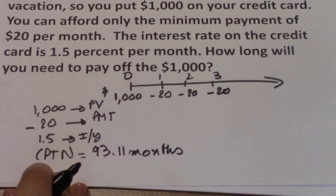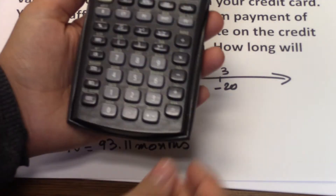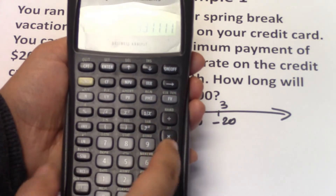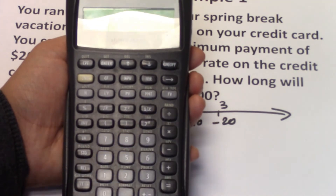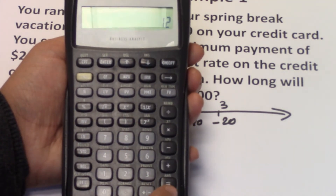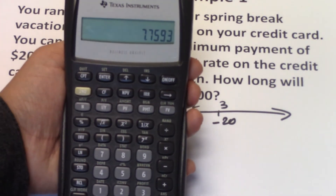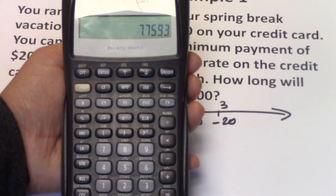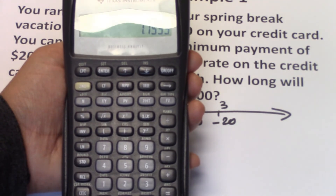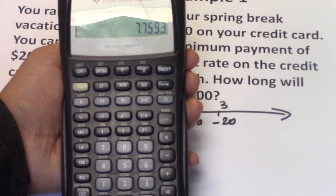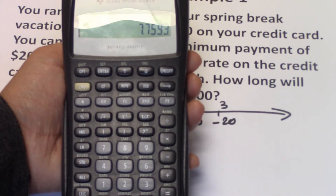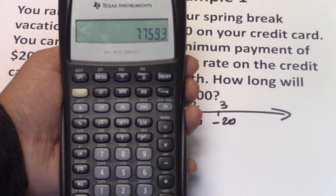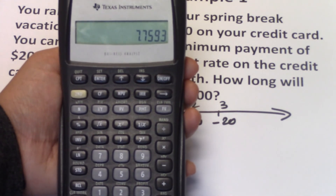To find how long we'll be paying for this $1,000 in years, all you have to do is take 93.11 and divide it by 12, which gives us 7.76 years. So it'll take just a little less than 8 years to pay off that $1,000 if we only make the minimum payment of $20 per month.